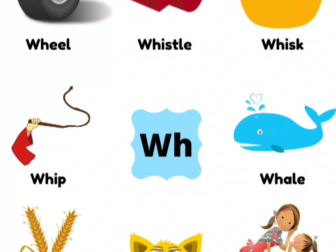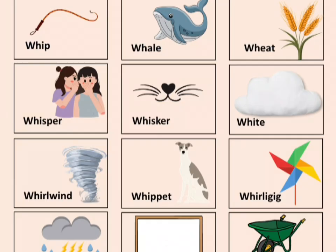Here also, W and H when they come singly have different sounds. But when the two come together, they make the sound WH. There are many more words with WH — for example: what, where, why, when, which — words we usually use to form questions.